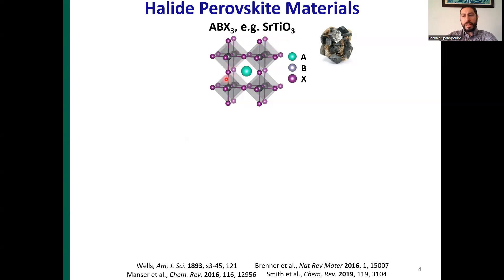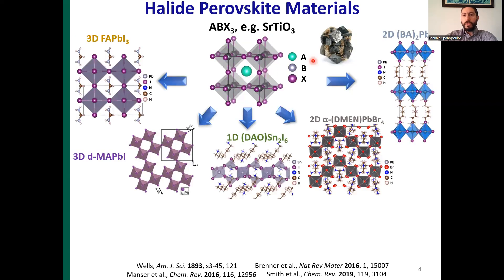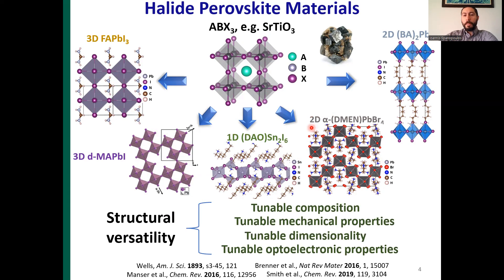If we replace the A-site cations with bulky organic counter-cations, then a whole new family of hybrid halide perovskites emerges, each one with unique properties — starting from the 3D formamidinium lead iodide perovskite, where the A-site cation is formamidinium, to the 3D defective double perovskites, 1D, 2D corrugated perovskites, and 2D Ruddlesden-Popper type perovskites. This unique structural versatility allows us not only to fine-tune the composition, but also to fine-tune the optical, mechanical, and electronic properties of the corresponding materials.